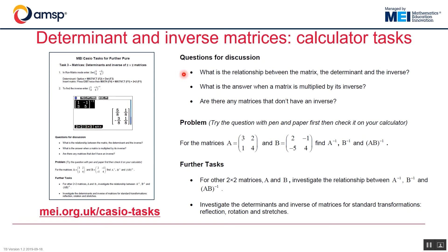So there are some questions for discussion. What's the relationship between a matrix, the determinant, and the inverse? What happens when a matrix is multiplied by its inverse? And are there any matrices that don't have an inverse?